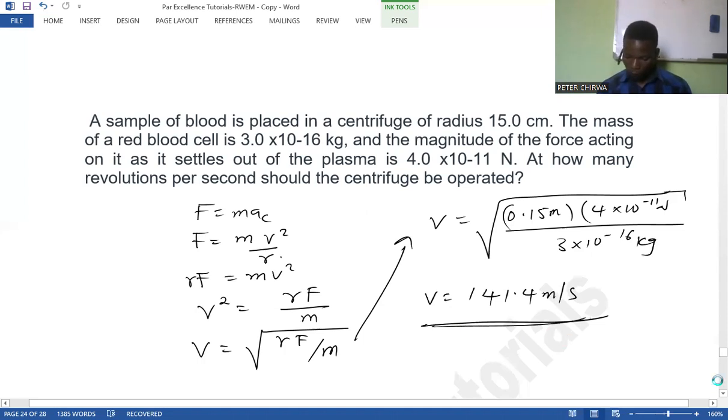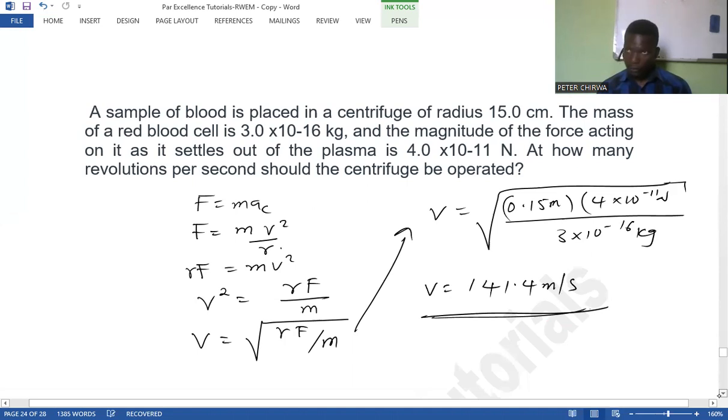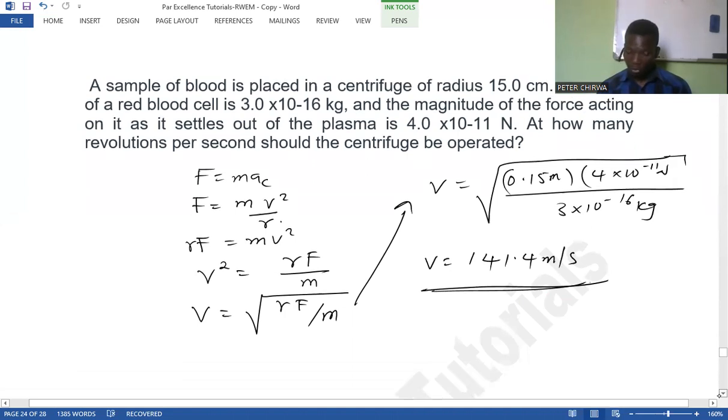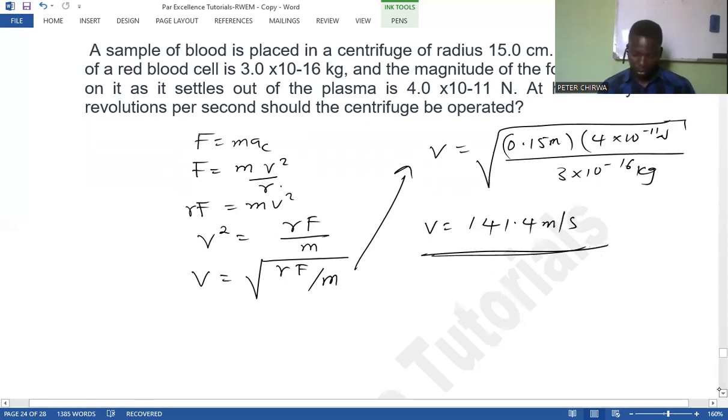So now we need to get this speed in revolution per second, or we need to get the angular speed. So we know that tangential speed is given by that. So angular speed is going to be velocity over radius. So we're going to have 141.4 meter per second over the radius, which is 0.15 meters. So the angular speed is going to be 942.8 rad per second.